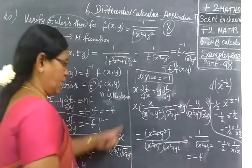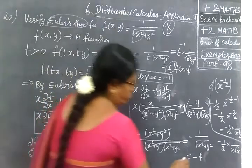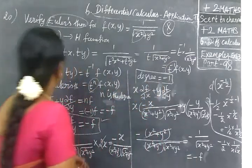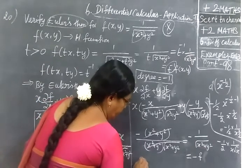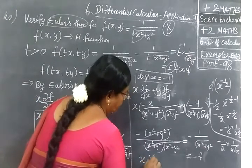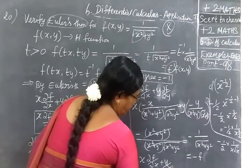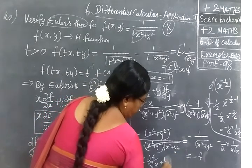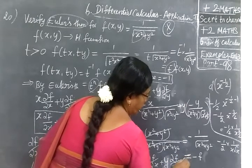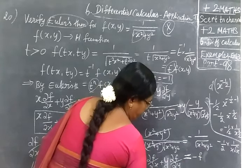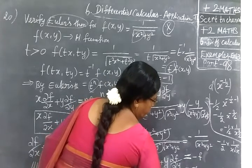So we have started LHS and we got the answer minus f. So Euler's theorem is verified. Final answer: x(∂f/∂x) + y(∂f/∂y) = nf. Hence Euler's theorem is verified.